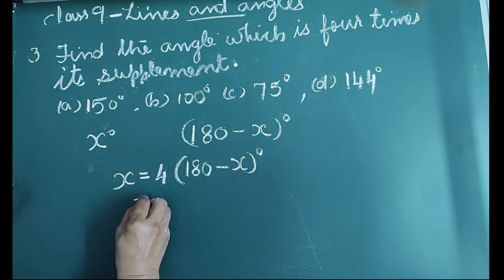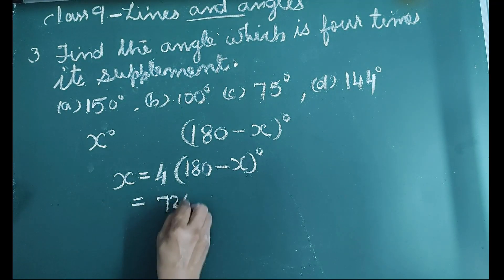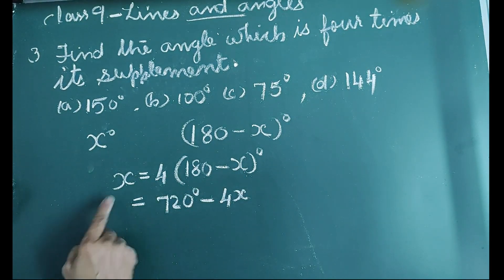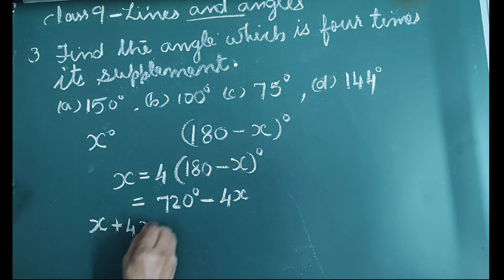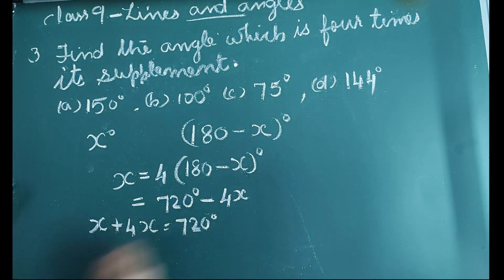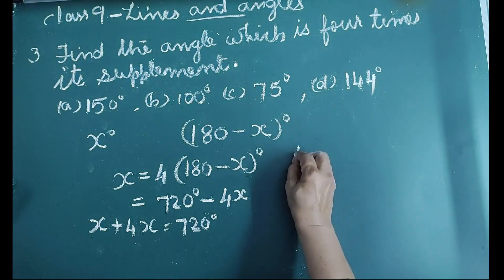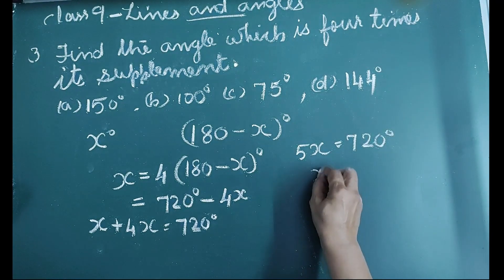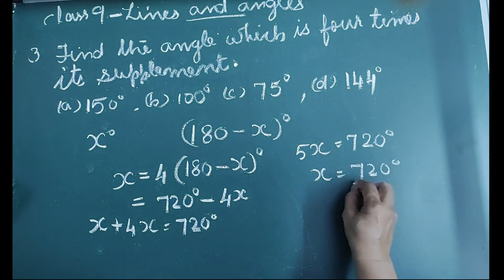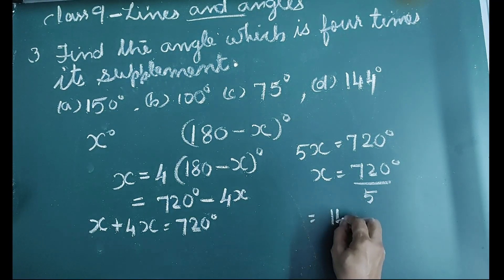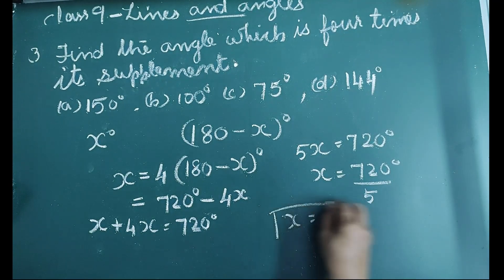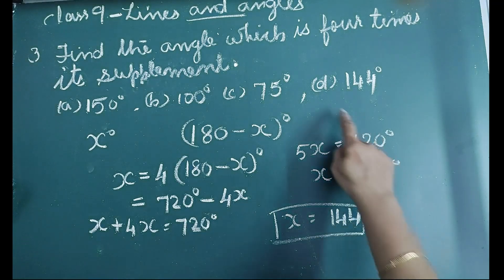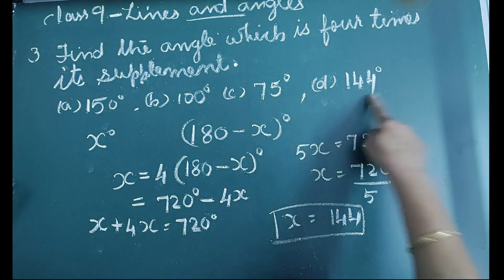Expanding: x = 720° − 4x. Then x + 4x = 720°, so 5x = 720°, giving x = 720° ÷ 5 = 144°. The value of the angle is 144°. Therefore, the correct option is D, 144°.